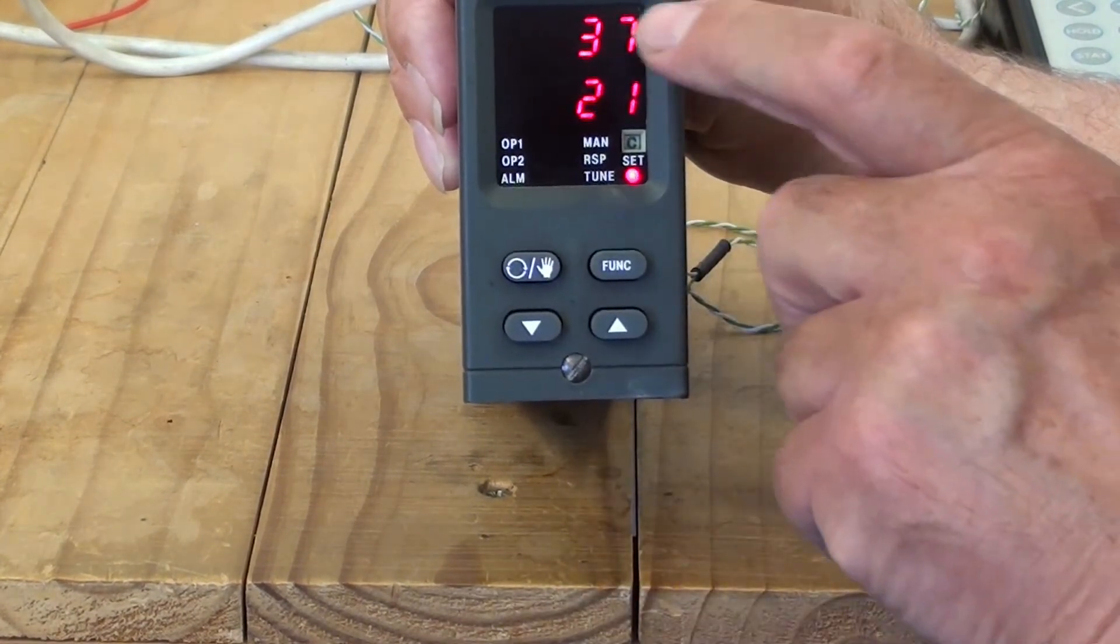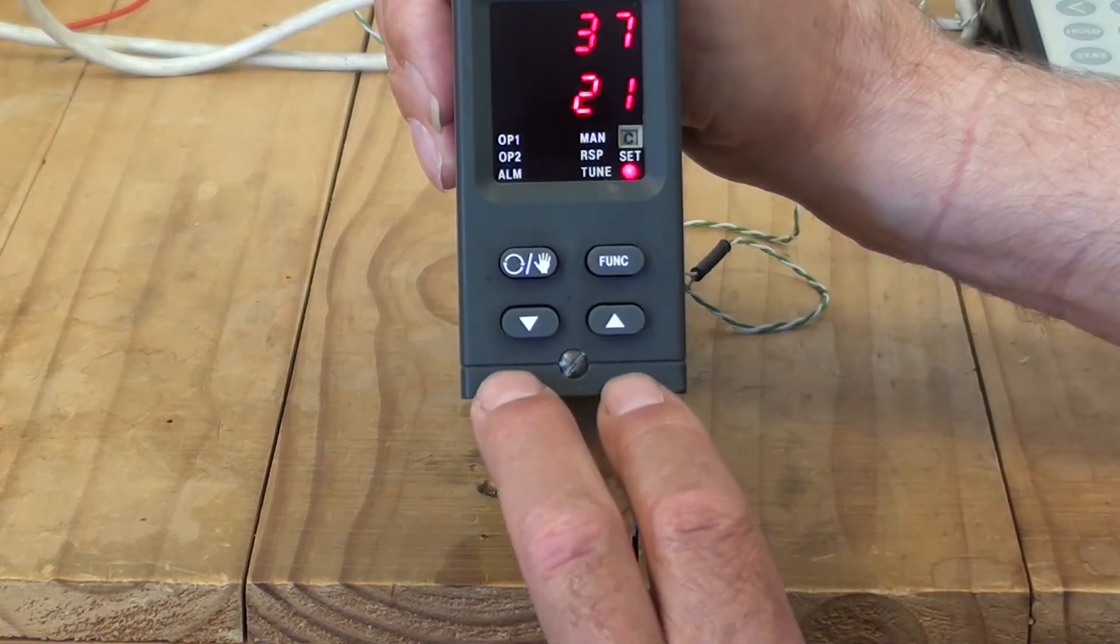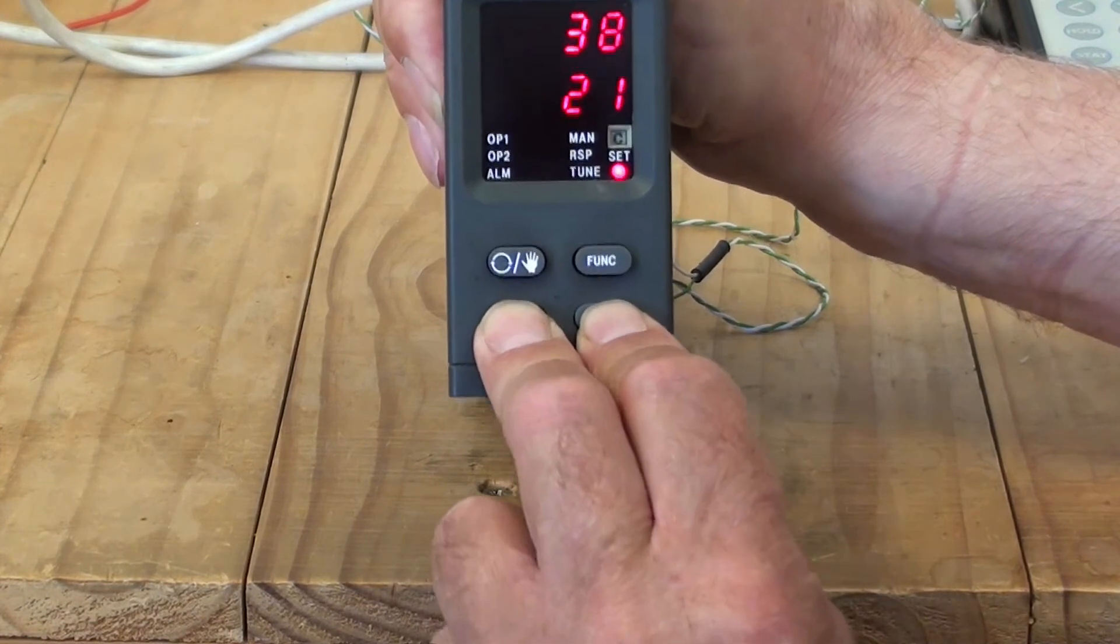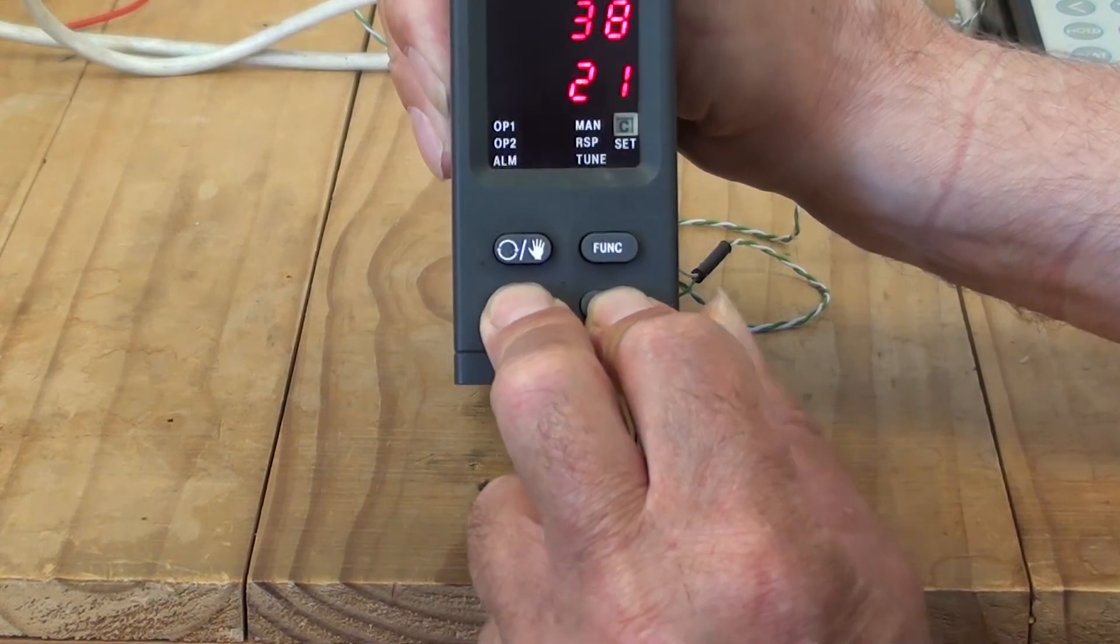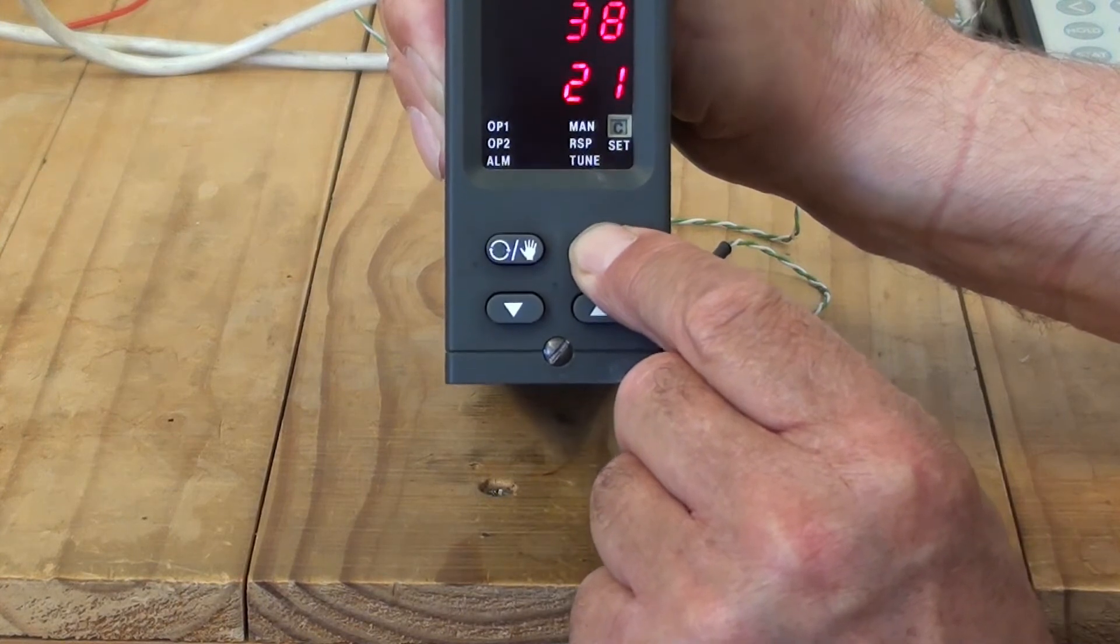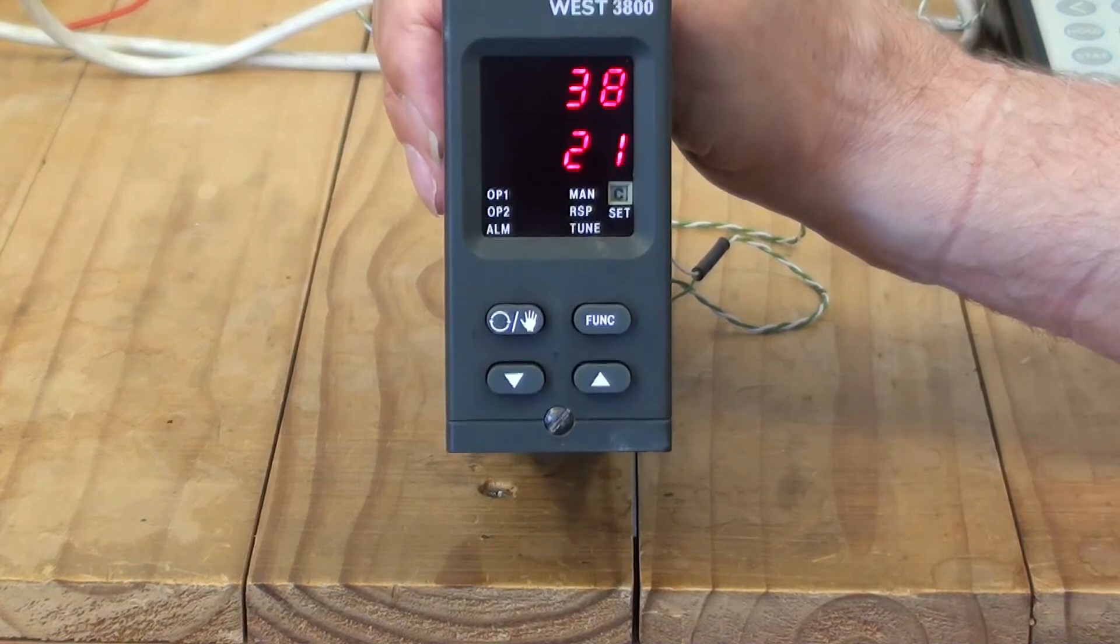Come back to the process value at the top, the setpoint on the bottom, and press the up and down arrows together, the raise and lower arrows together. Hold them for five seconds. Display flashes. Set light flashes. Press function key for about three seconds until it goes off. Now you're back into normal operation mode again.